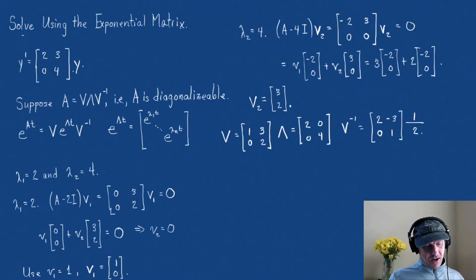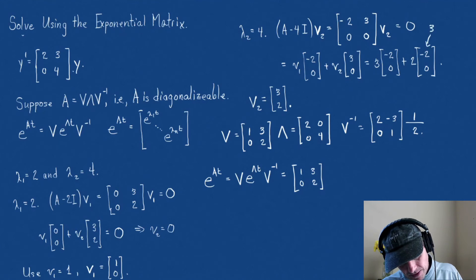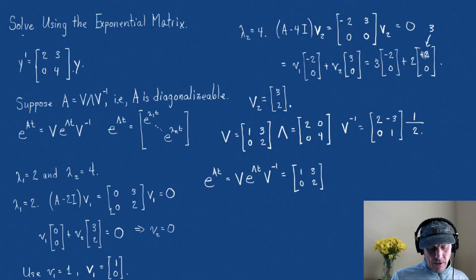So, here we go. Now, we can write the problem as, so our solution is Y equals some initial, is, E to the, well, let's, let's first do this. E to the AT, well, this is, we just said that this is V times E to the lambda T times V inverse. Well, V, we have that, that is, 1, 0, 3, 2, and, whoops, I made a mistake up above. That should have been a 3 right there, not a minus 2. That works.